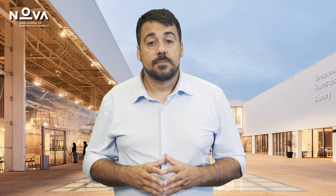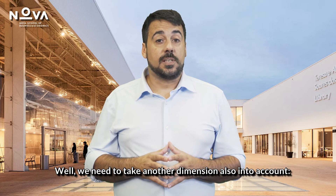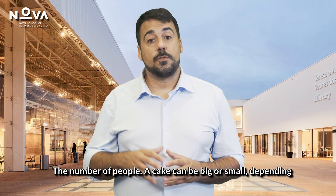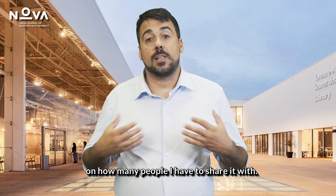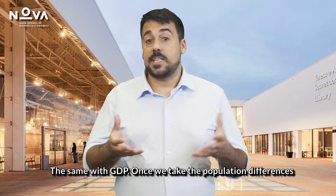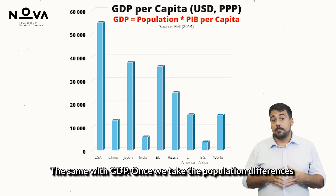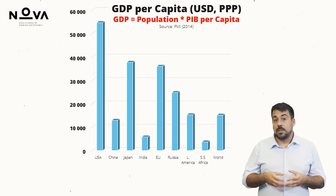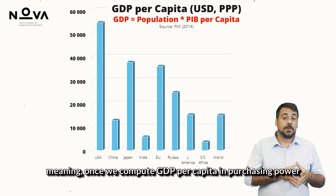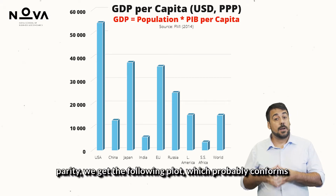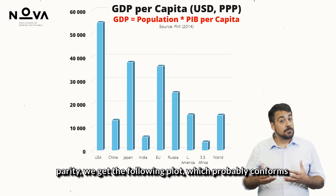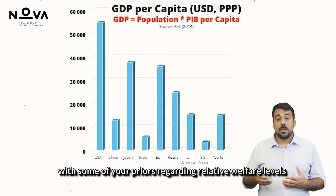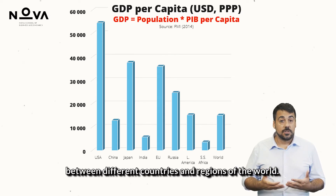Does this make sense? Well, we need to take another dimension also into account: the number of people. A cake can be big or small depending on how many people I have to share it with — the same with GDP. Once we take population differences into account, meaning once we compute GDP per capita in purchasing power parity, we get the following plot, which probably confirms some of your priors regarding relative welfare levels between different countries and regions of the world.